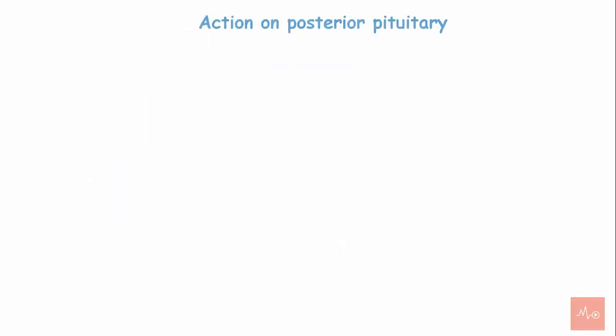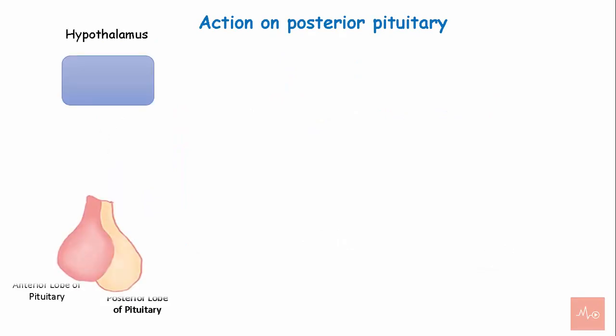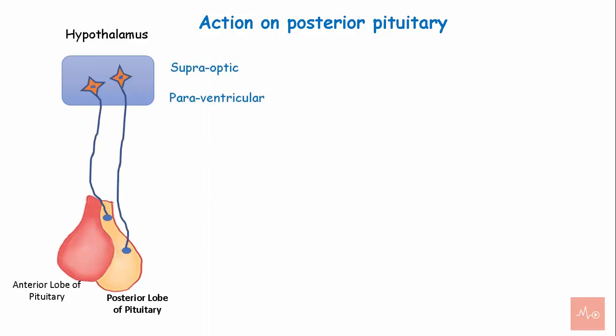Action on the posterior pituitary. The hypothalamus is connected to the posterior lobe of the pituitary gland via neural connections arising from the supraoptic and the paraventricular nuclei.